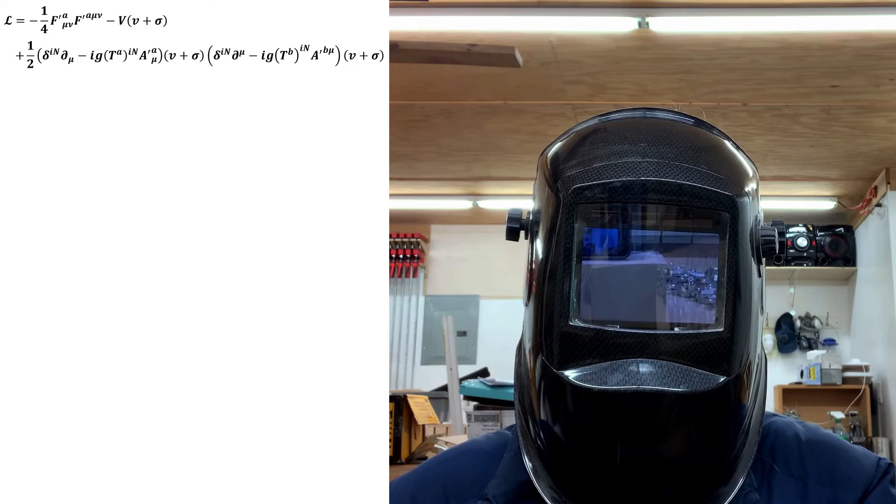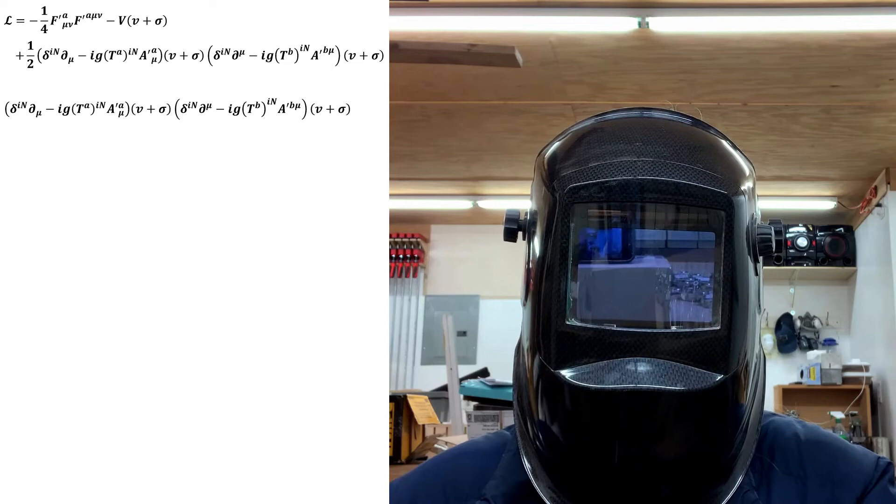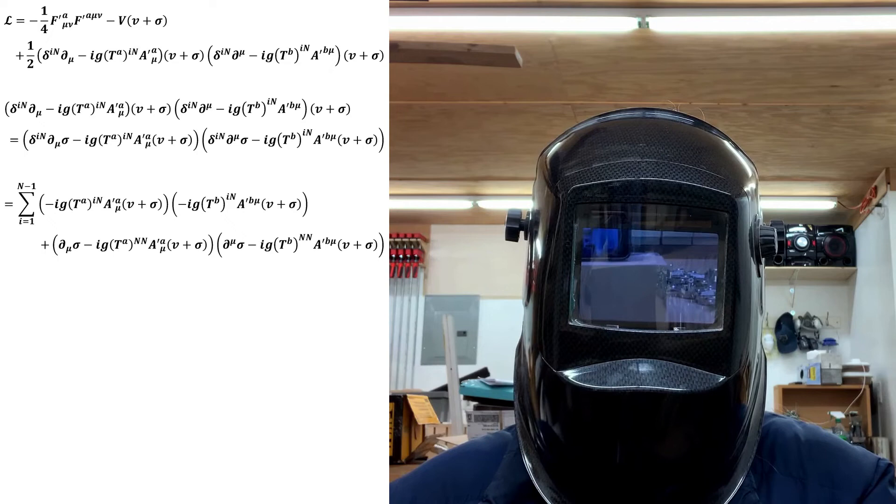From here, all we need to do is algebraically rearrange the middle term to reveal the vector boson mass terms. The first step is to distribute v plus sigma, and then break up the i-index sum. We can then distribute completely and simplify, and then reassemble the i-index sum.